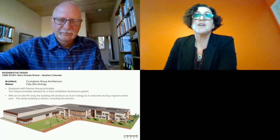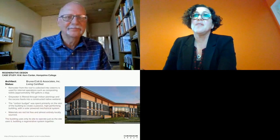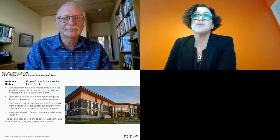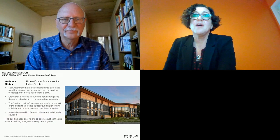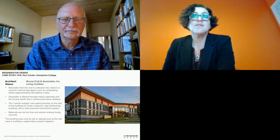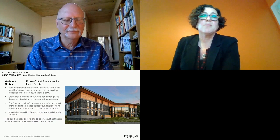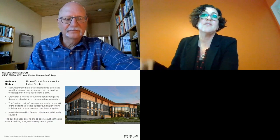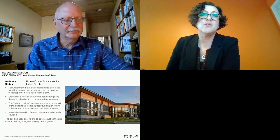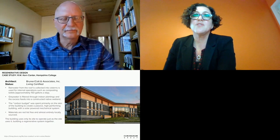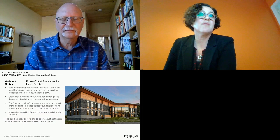Another example is the Living Building-certified RW Kern Center — a multipurpose facility that generates its own energy, captures and treats its own water, and processes and recycles its waste. The building includes classrooms, offices, a community café, and gallery, and serves as the primary campus entry point. Key petal highlights include rainwater and graywater use and net-zero energy achieved through a PV array combined with a high-performance envelope.